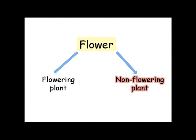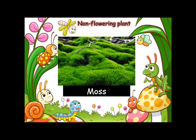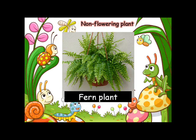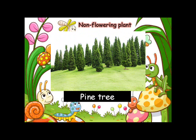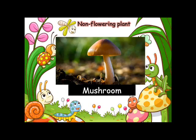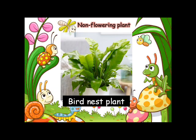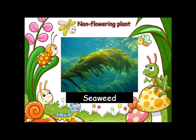Now let's look at the examples of non-flowering plants. They are moss, fern plant, pine tree, mushroom, bird nest plant, and seaweed.